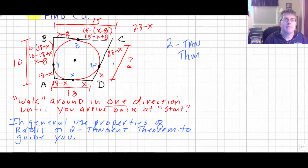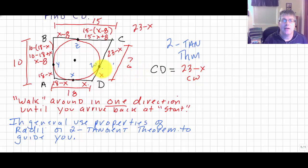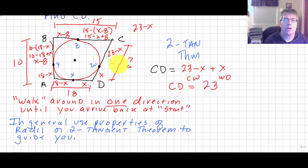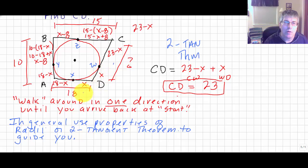Now I look at CD: it's made up of CW, which is 23 minus X, plus WD, which is X. So 23 minus X plus X equals 23. CD is 23. Interesting — I never did find out what X was, and didn't have to in this problem. It came out in the wash when I did my walk around. So CD is 23. Notice how we started with some value X, walked all the way around in the same direction, and that made the problem a lot easier to solve. We'll get more practice on these in class.